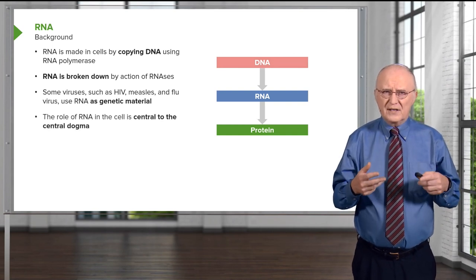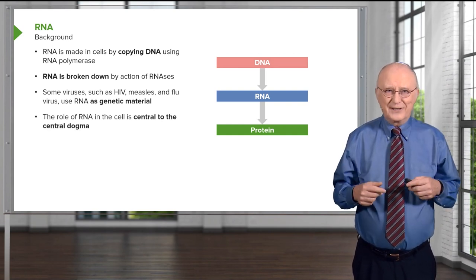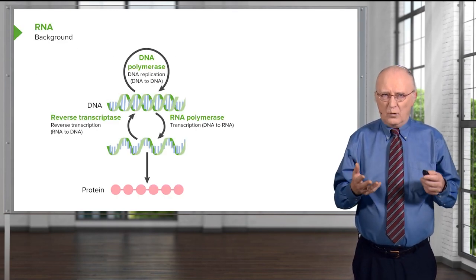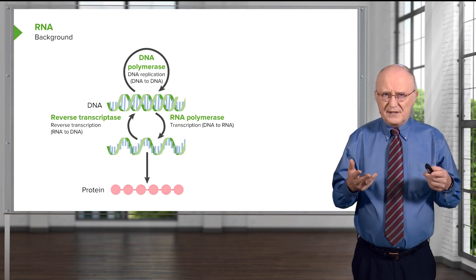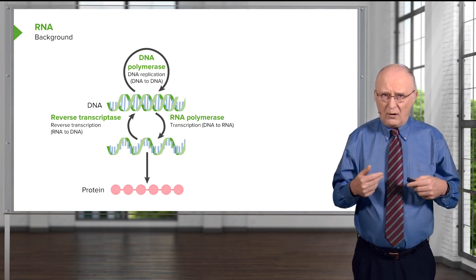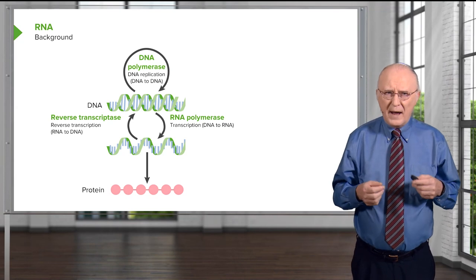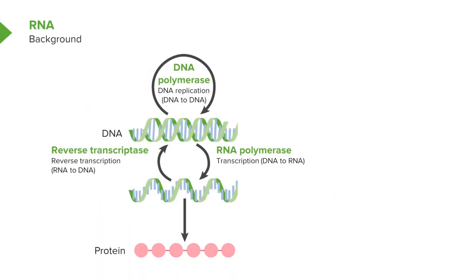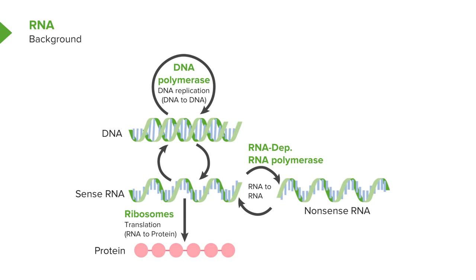The role of RNA in the central dogma is central to the central dogma. The central dogma says that DNA copies itself, DNA makes RNA, and RNA can, in some cases, go back to DNA by reverse transcriptase. But more importantly, RNA makes protein, and that protein is essential for all living cells.